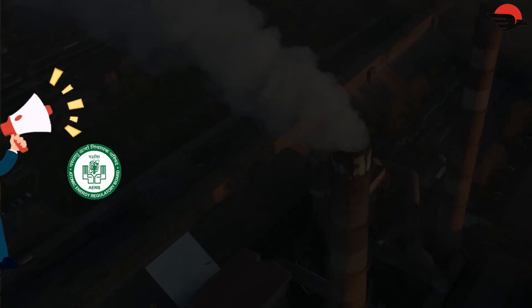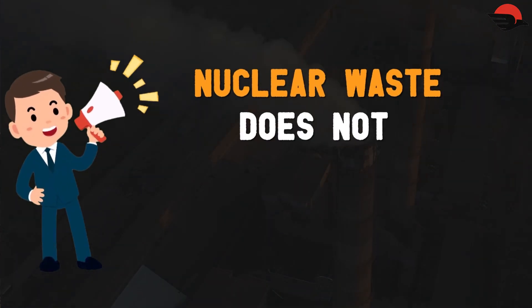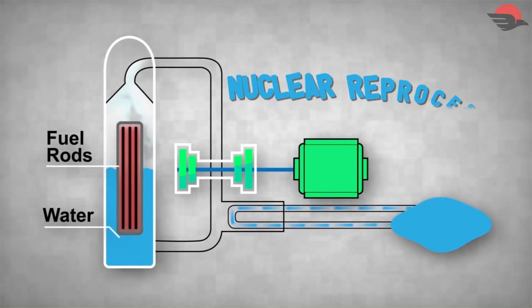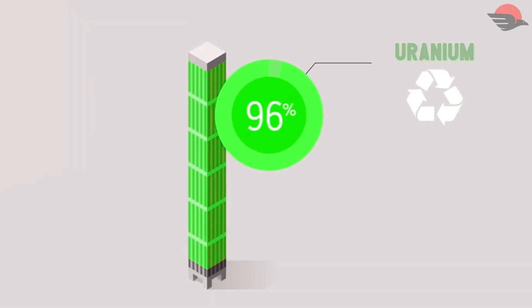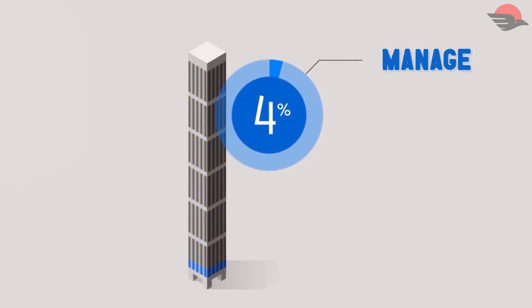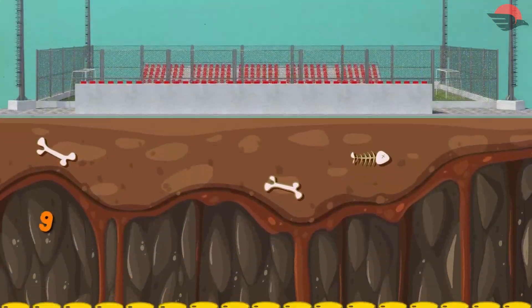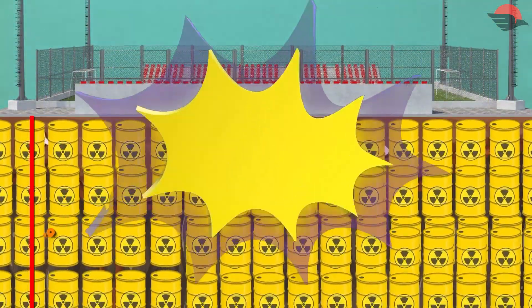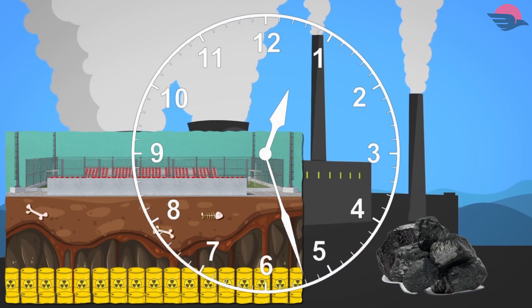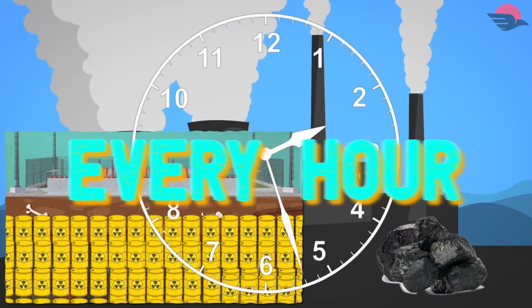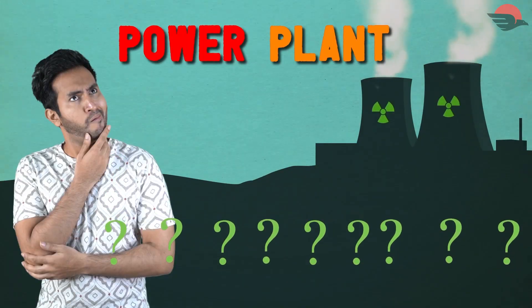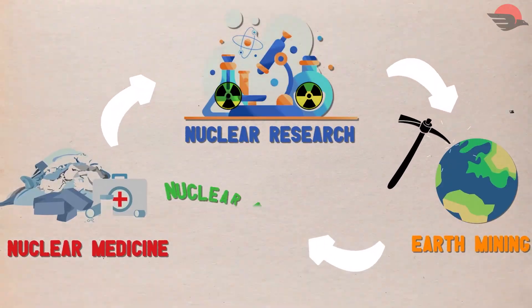Who manages nuclear waste in India? The Atomic Energy Regulatory Board, which says that nuclear waste does not produce too much waste. Let me explain: in nuclear reprocessing, 96% of uranium from the waste is recycled, and only the remaining 4% needs to be managed. In fact, from 1950 till now, all the nuclear waste produced could fill a football ground up to 9 metres high — which sounds like a lot, but coal plants produce the same amount of waste every hour. Also, nuclear waste is not only produced by power plants — fields such as nuclear medicine, nuclear research and rare earth mining also produce nuclear waste.